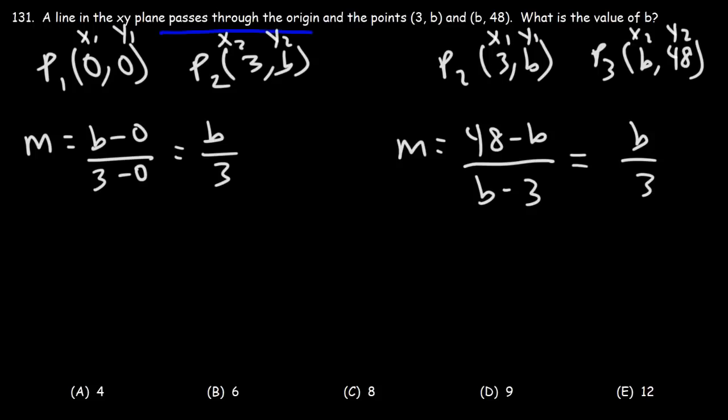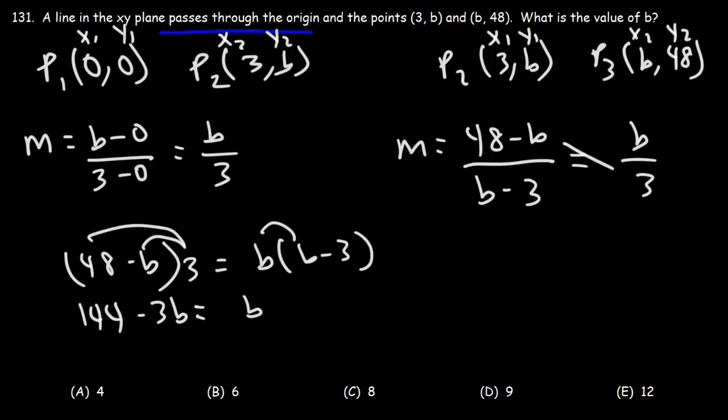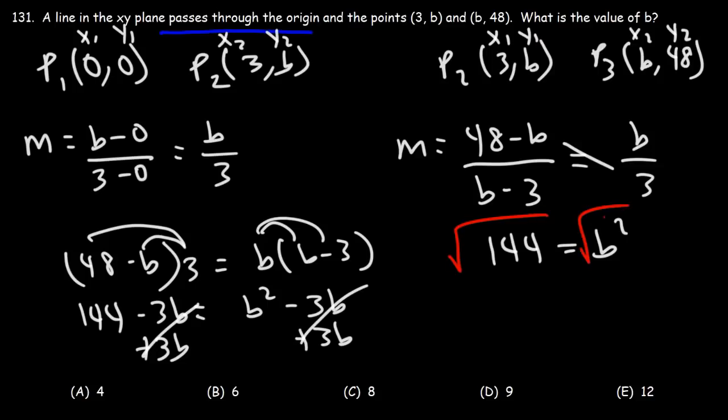So let's solve it. What we're going to do is cross multiply. So we're going to have 48 minus b times 3 equals b times b minus 3. Now let's begin by distributing the 3 on the left side. So 3 times 48, that's going to be 144, and then 3 times negative b, that's negative 3b. Here we have b times b, which is b squared, and this is also negative 3b. So adding 3b to both sides will cancel what we see here. So 144 equals b squared. Our next step is to take the square root of both sides. The square root of 144 is 12—technically plus or minus 12, but only positive 12 is listed as an answer. So E is the right answer.